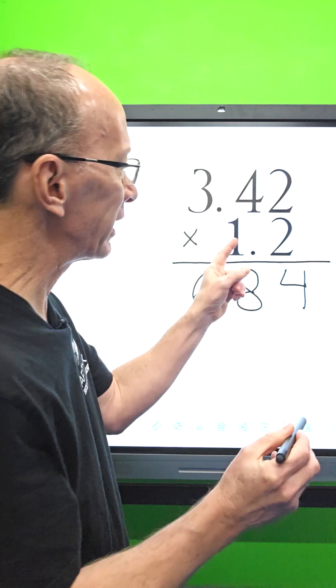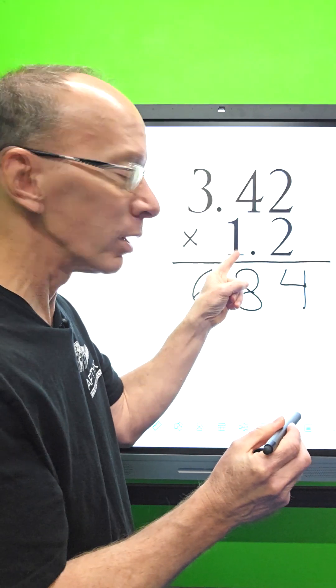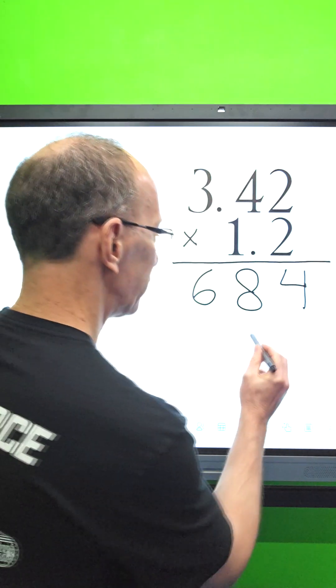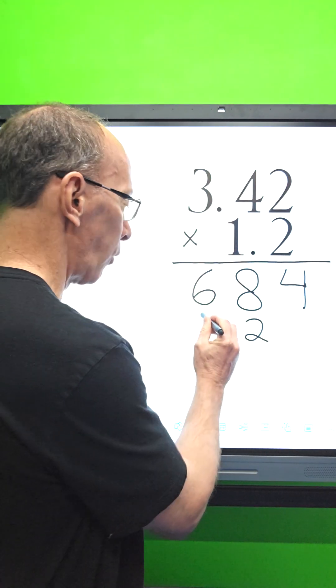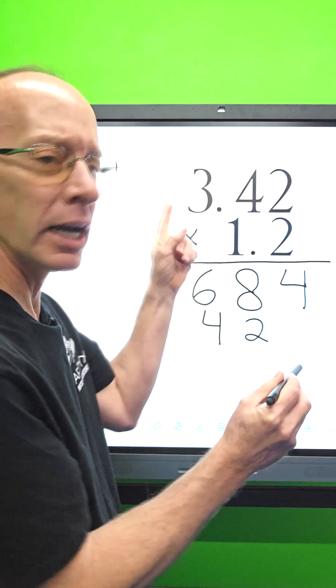One times four is four, out the door, and then one times three is three, so I put the three right here. Now I'm gonna go ahead and add those numbers up.